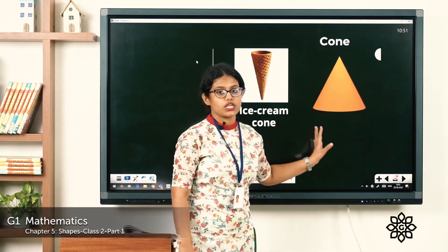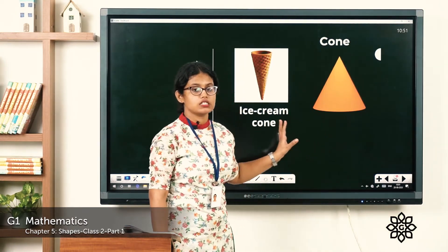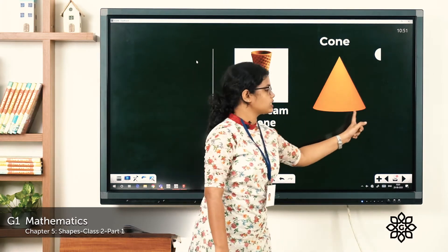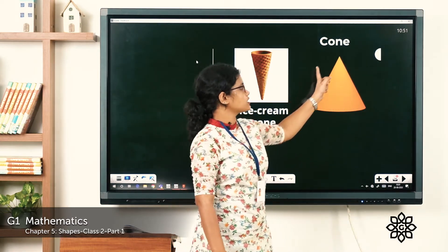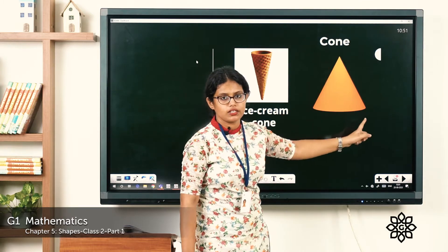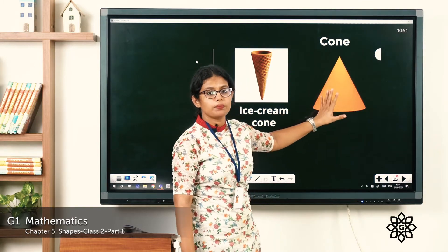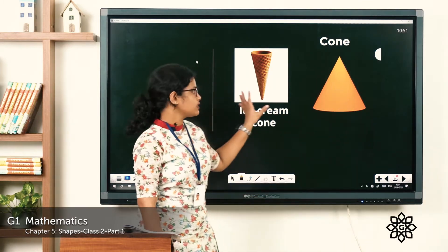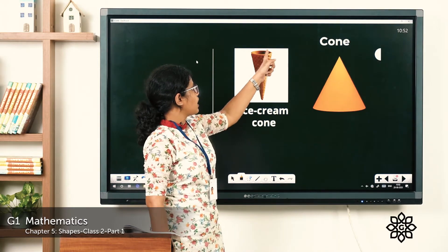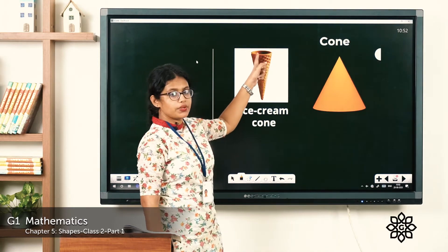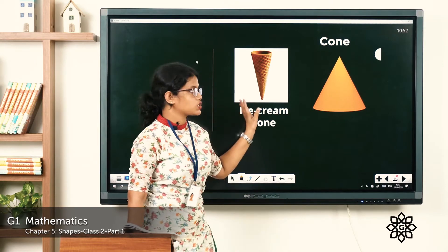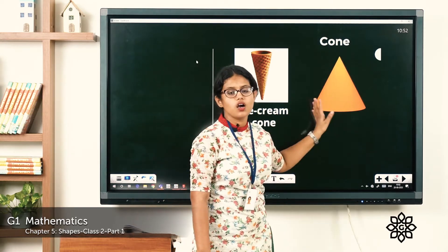What is this shape? This is a cone. You can see a circle at the bottom and a triangle shape at the top — this shape is a cone. Have you seen an ice cream cone? You can see the round shape here and the triangular shape here. So this is a cone.